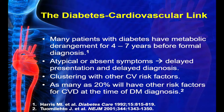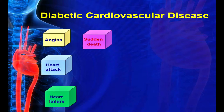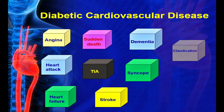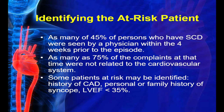Patients with diabetes often have other cardiovascular risk factors — hypertension, dyslipidemia, obesity — and as many as 20 percent will have other cardiovascular risk factors at the time of diabetes diagnosis. Sudden death is one of the manifestations of cardiovascular disease in patients with diabetes. In terms of identifying the at-risk patient: as many as 45 percent of persons who have sudden cardiac death were seen by a physician within the four weeks prior to the episode, and as many as 75 percent of those complaints at that time were not related to the cardiovascular system.